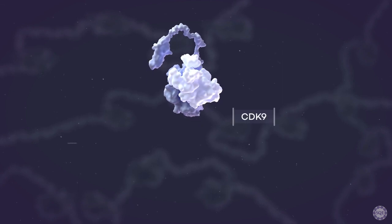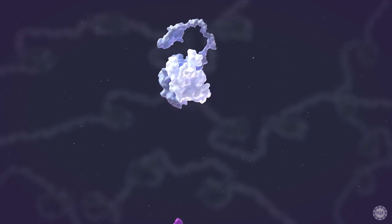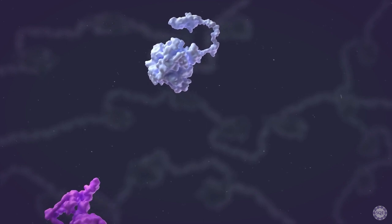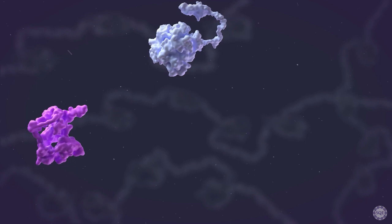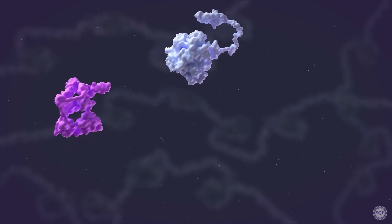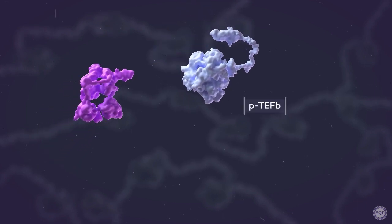CDK9 is a major kinase regulating the elongating form of RNA polymerase II. CDK9 is a major kinase for elongation and is found with Cyclin T1 or T2, known as the PTEFB complex.